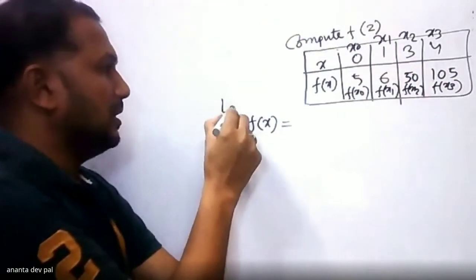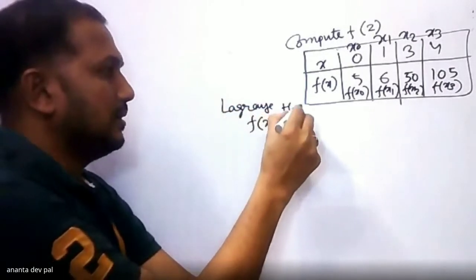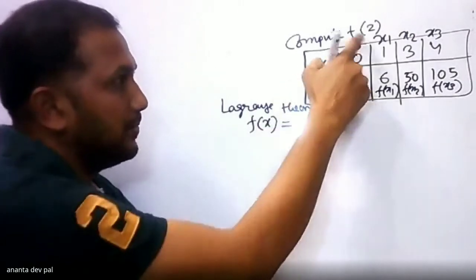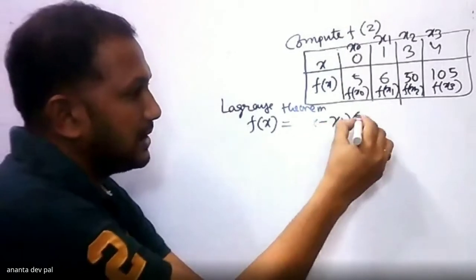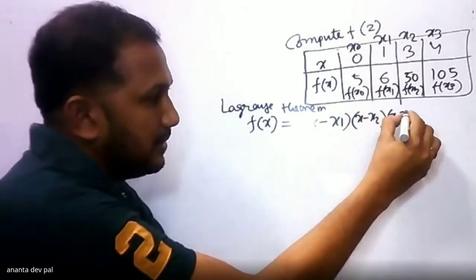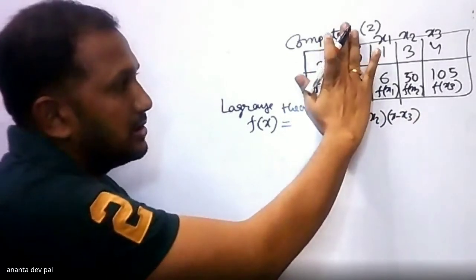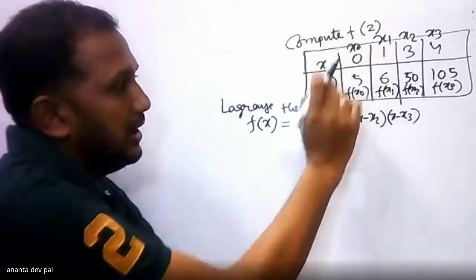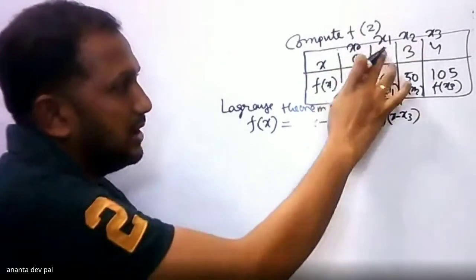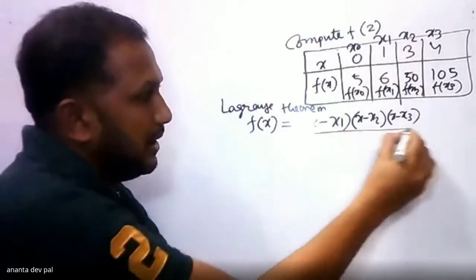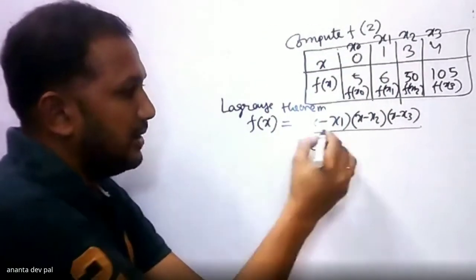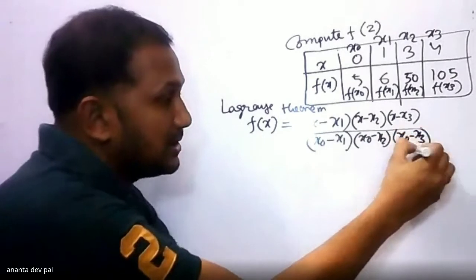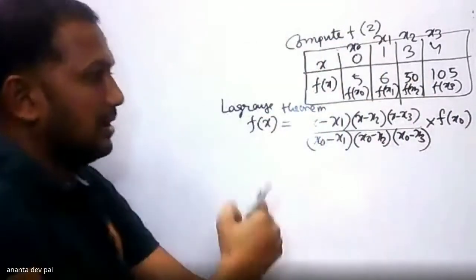Now, according to the Lagrange formula, f(x) equals: x is the given value, that is f(2) here. When you delete the x0 column from your mind, you can easily create the first term: (x minus x1)(x minus x2)(x minus x3) divided by (x0 minus x1)(x0 minus x2)(x0 minus x3), multiplied by f(x0). This is the first term of the formula.